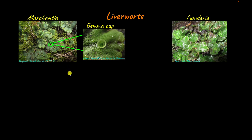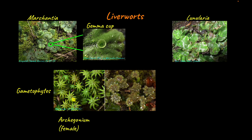Sexual reproduction in liverworts occurs through structures called gametophytes. The female gametophyte is the archegonium and the male gametophyte is the antheridium. These female and male gametophytes may be produced on the same thallus or on different thalli, and they are morphologically different — the archegonium has a more starfish-like appearance while the antheridium has a more flattened disc-like appearance.